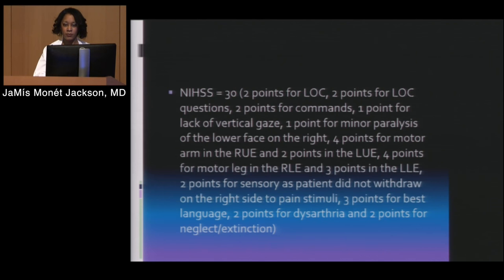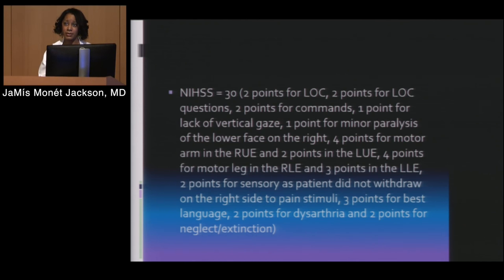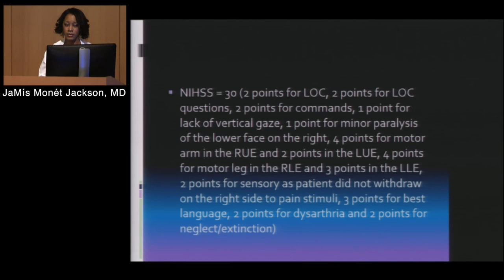That's important in how we time things — it could point to the stroke having happened earlier. This was probably one of the highest NIH stroke scales I've seen: hers was 30. The NIH stroke scale is something we use in evaluation of the patient to determine the severity of their stroke. This patient had almost everything positive: decreased level of consciousness, unable to follow commands or answer questions, gaze deviation, and unable to move either side of the body very well.